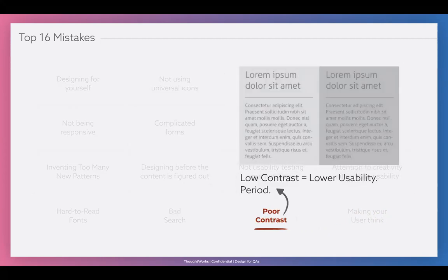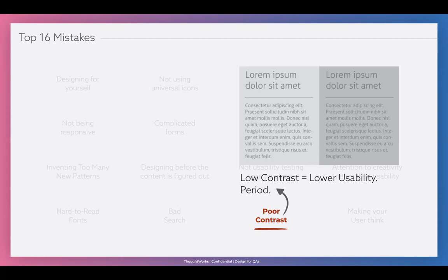Poor contrast — this also comes under accessibility a lot. As you see in the example, the left side is a little better than the right side, but it is still difficult for people to read. Is your text contrast ratio proper? Is it readable enough? If the designer has placed a lot of text on a very busy image, can you actually read it? Always check the contrast ratio if there is an issue.